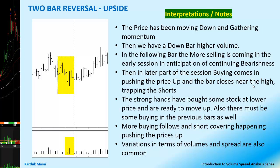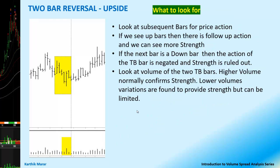The strong hands have bought stocks at lower prices and are ready to move up. There must be some buying in the previous bars as well. More buying follows and short covering happens, pushing prices up. Variations in terms of volume and spread are also quite common. When we see a 2-bar reversal upside, look at the subsequent bars for price action. If we see up bars, there is follow-up action and more strength. But if the next bar is a down bar, the action of the TB bar is negated. Higher the volume, more the strength; lower volume variations can provide strength but it is normally limited.